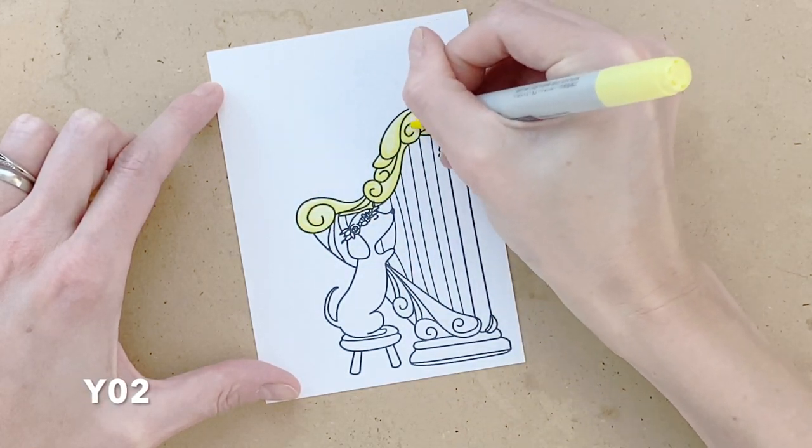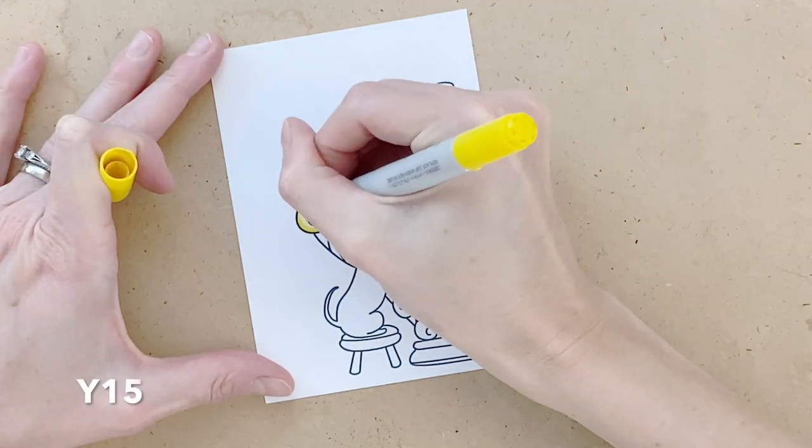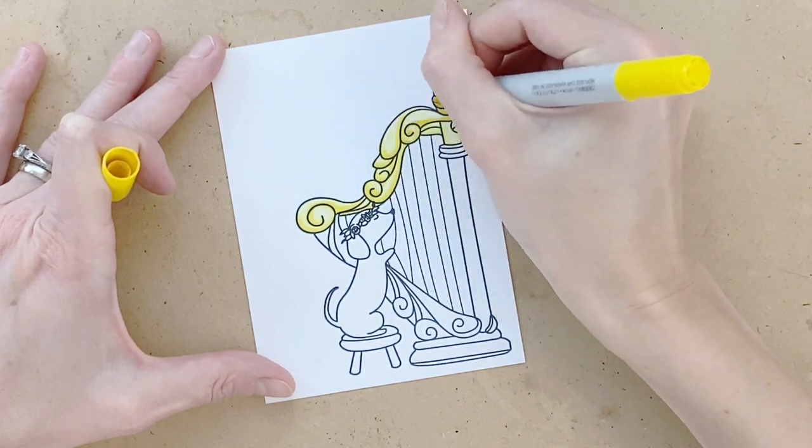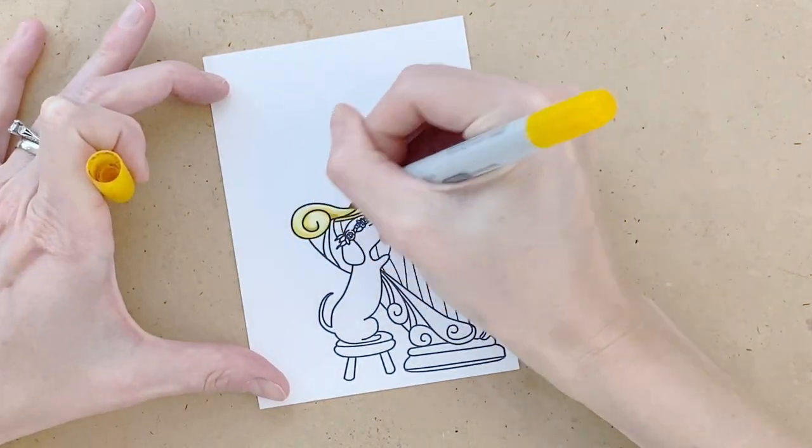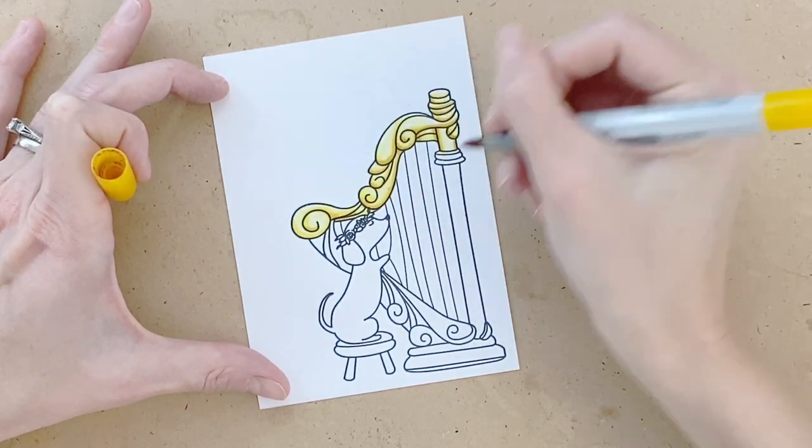Now I'm on Y02 starting to add in some of my shadows. Once I finish that I'll move on to my next yellow which is Y15. This is kind of much more of a warmer yellow and again kind of going back over my shadows and then I'm going to finish with Y23 my darkest shade of yellow.